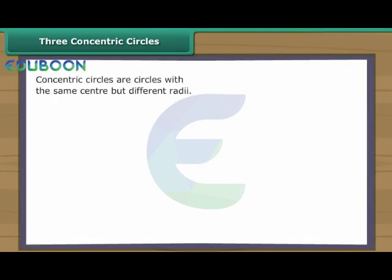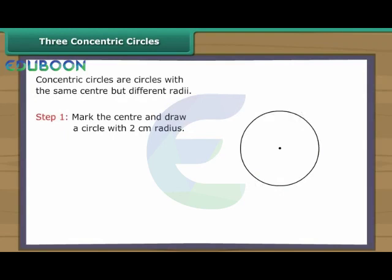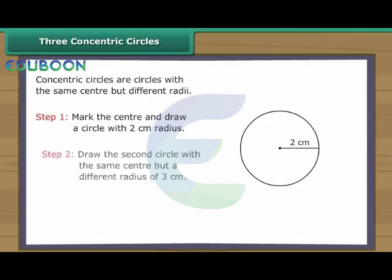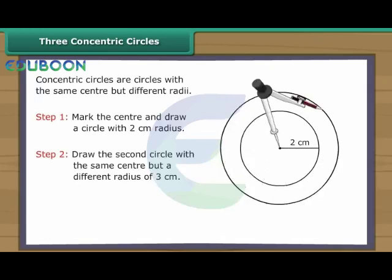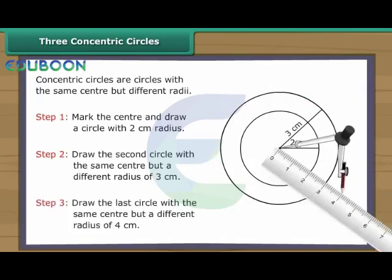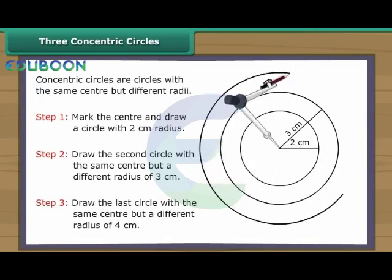Three concentric circles. Concentric circles are circles with the same centre but different radii. Let us now draw three concentric circles with radii two, three, and four centimetres. Mark the centre and draw a circle with two centimetres radius. Draw the second circle with the same centre but a radius of three centimetres. Draw the last circle with the same centre but a radius of four centimetres. We have three concentric circles.